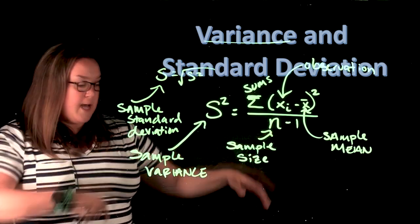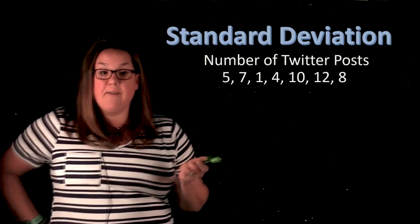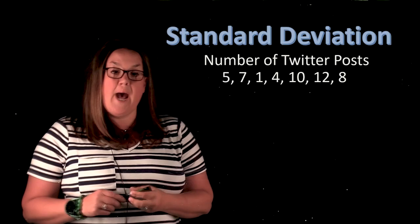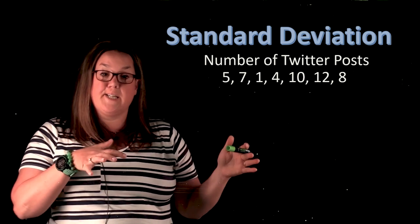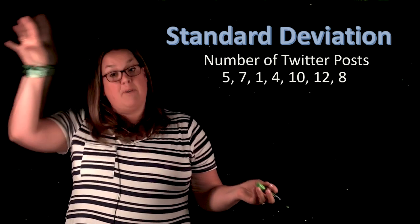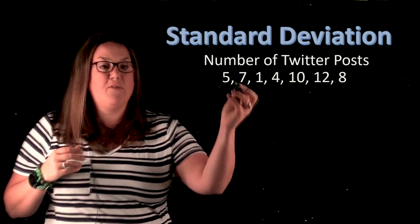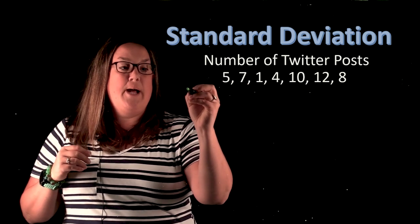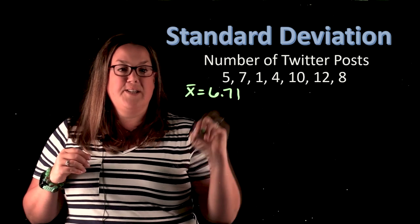So on the next slide, we're going to be talking about how to actually calculate this. So we still have that same data that we've been looking at in past videos, looking at the number of Twitter posts. So to calculate standard deviation in a past video, we did X bar, and in a video past as well, we did deviation. So I'm just going to remind you of those measurements. So we had X bar, and that was 6.71 for this data set.